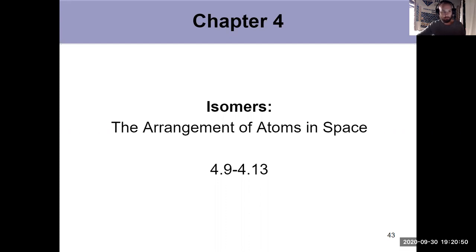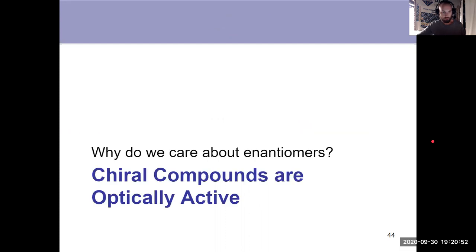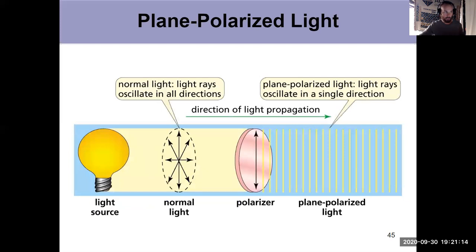But one thing I do want to touch on briefly before we get into that is why are enantiomers significant? All their physical properties are the same. They only differ in 3D. All the connections are the same. We know that about configurational isomers, but they do have one notable difference, and that's how they interact with light, specifically plane polarized light, which is different from normal light.